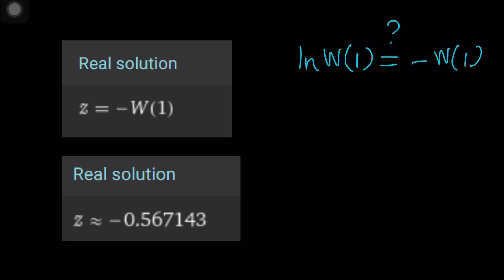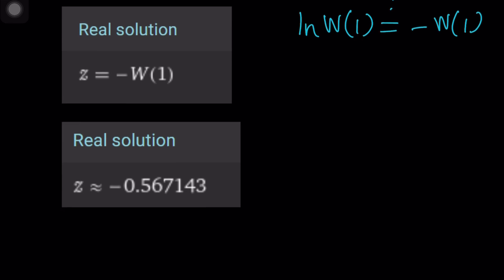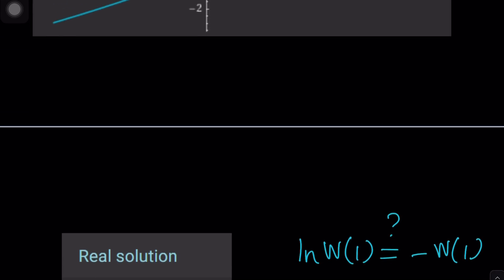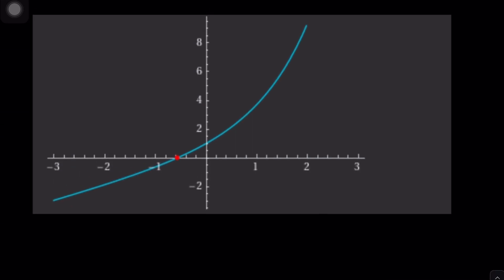And if you wanted to look at the numerical value, the numerical value would be something like this. Negative 0.567, so on and so forth. And if you look at the graph carefully, you're going to realize that the solution is actually between negative 1 and 0.